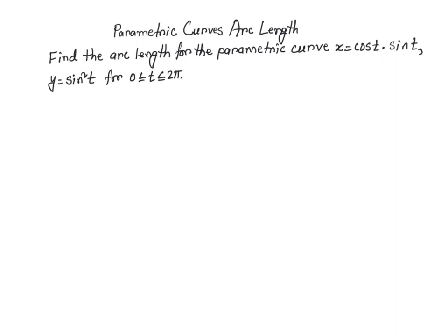In this video, I am going to find the arc length for a parametric curve given by x = cos(t)·sin(t) and y = sin²(t) for t between 0 and 2π. The arc length for a parametric curve is given by this formula.